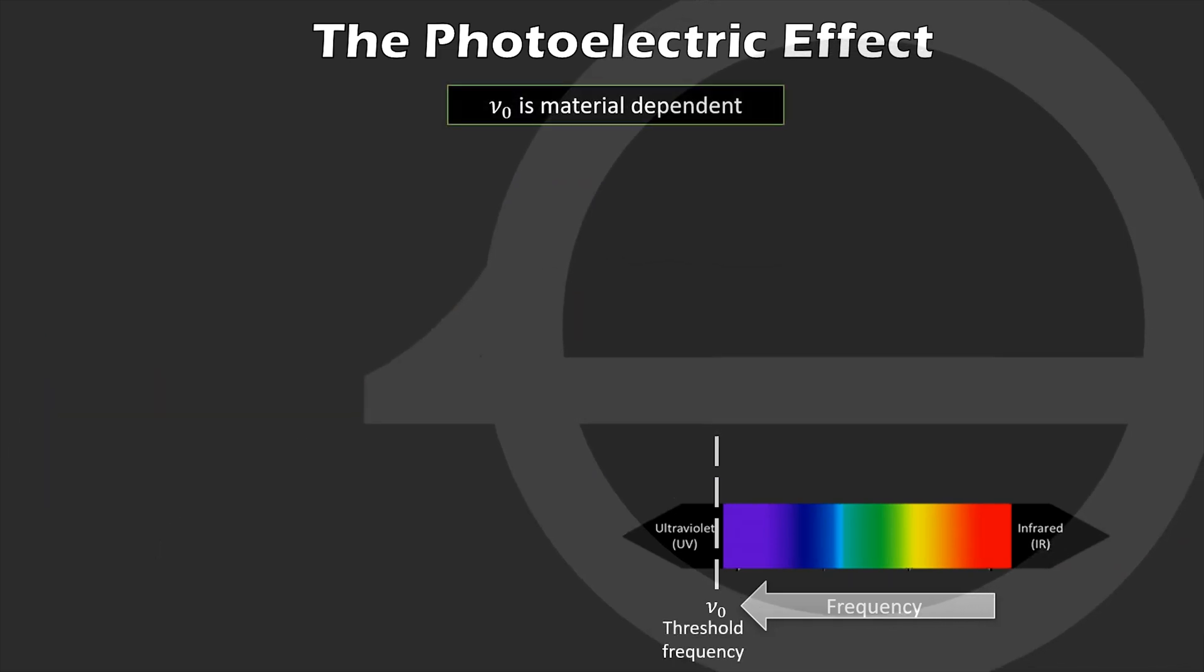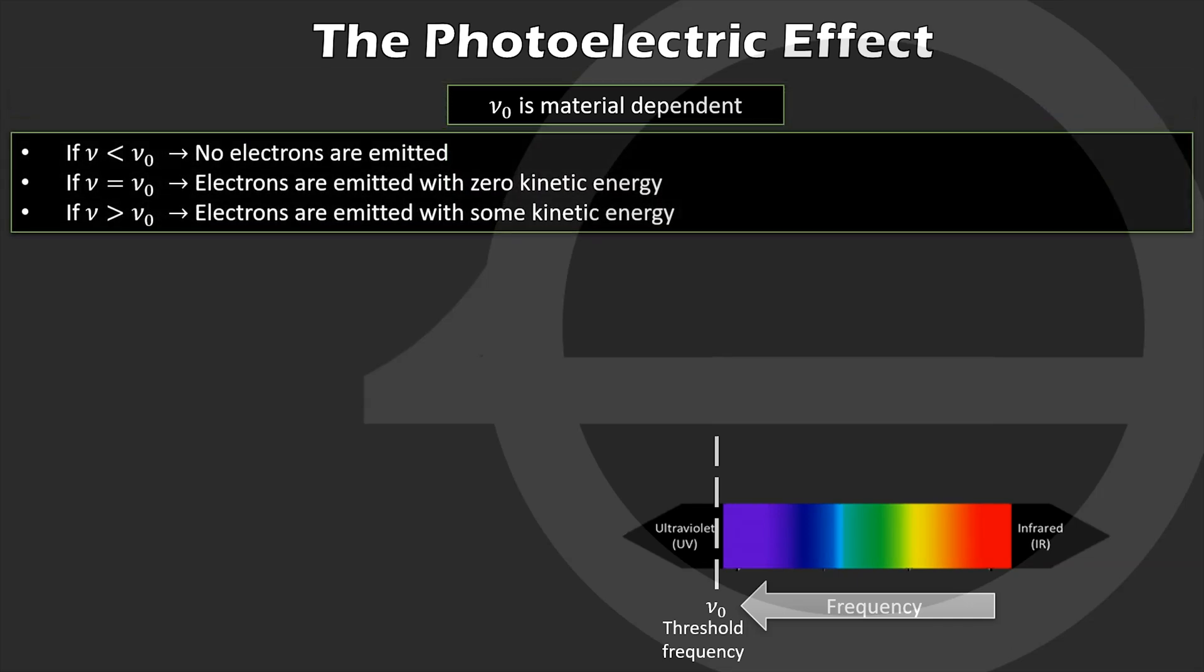The frequency nu-naught is known as the threshold frequency. It is material dependent, so it is different for different metals. As we have seen, if the light frequency is below the threshold, then no photoelectrons are emitted. If it is equal to the threshold, photoelectrons are emitted at rest. If it is higher than the threshold, photoelectrons are emitted with some kinetic energy.